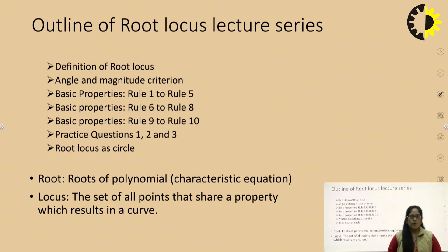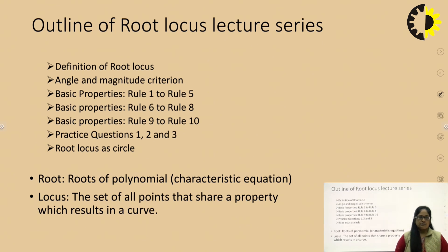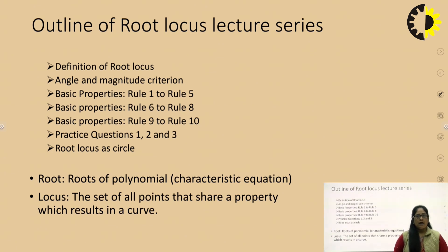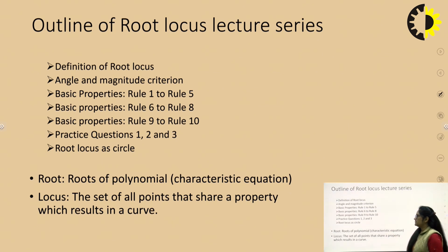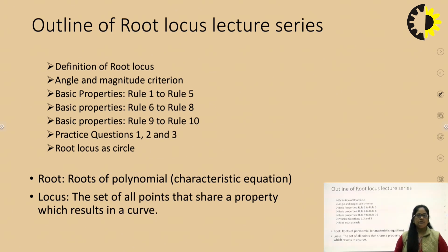What is Root Locus in control system? It is basically a graphical method. Root means we are talking about the root of the characteristic equation, and locus is the set of all points that share a property which results in a curve. This is how we are going to understand the stability and the transient response through Root Locus.